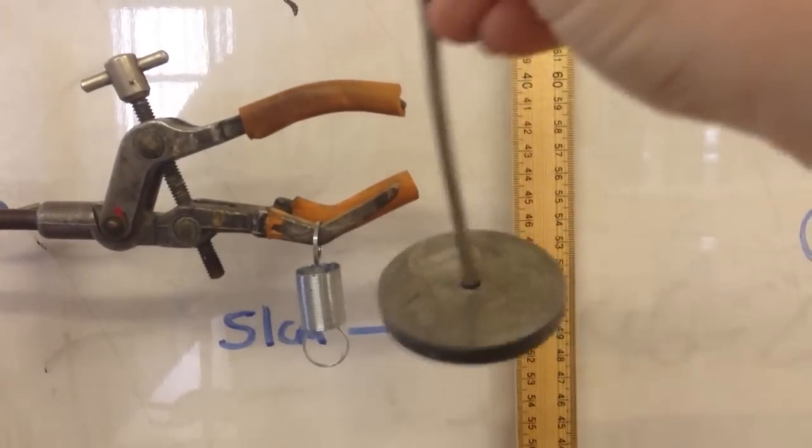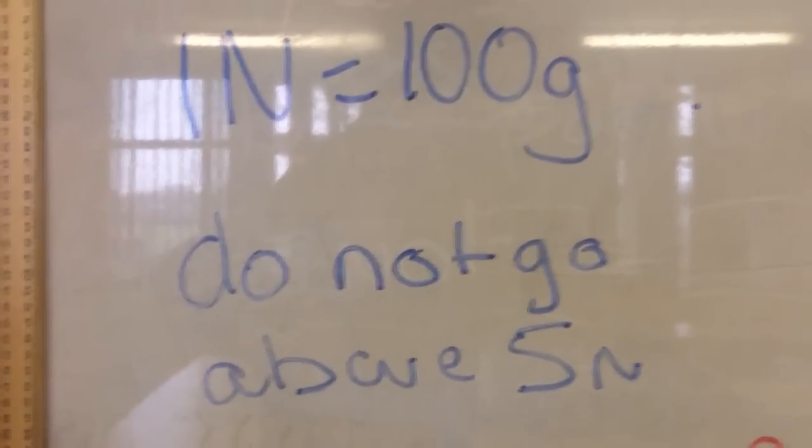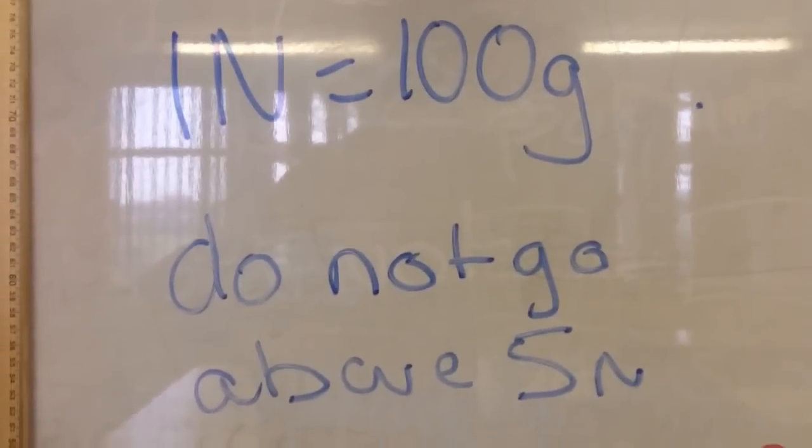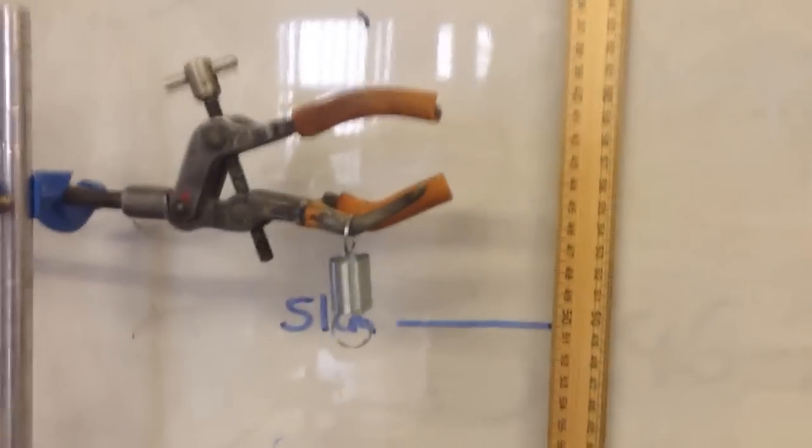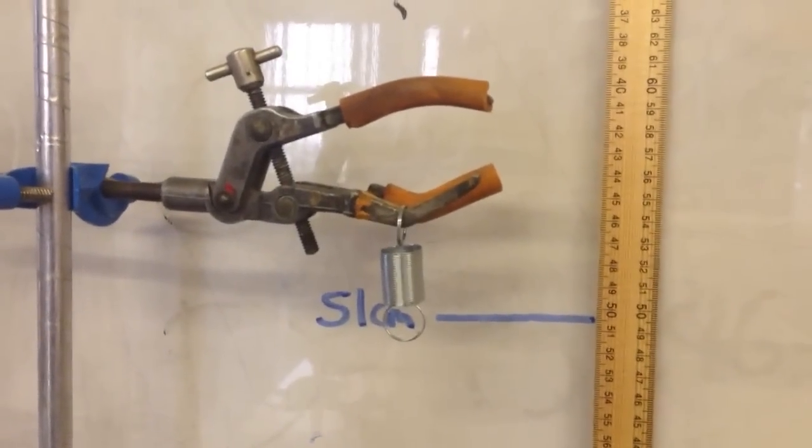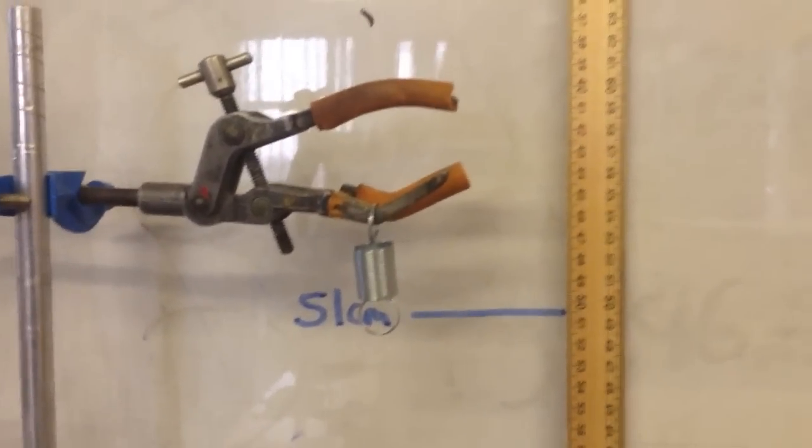I have a weight with a hook on the end and a really important thing you need to remember when you're doing this practical is that 1 newton is 100 grams and don't go above 5 newtons especially when you're using these springs because I have seen them break and ping and hit people in the eye which is dangerous.